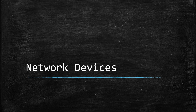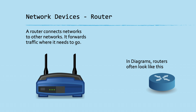Now let's talk about network devices. The first is a router. A router connects networks to other networks — your phone or laptop connects to your home router via Wi-Fi, and that home router connects you to the internet, which is another network. Your local area network is only able to talk to the wide area network because of your router, which bridges those two together.